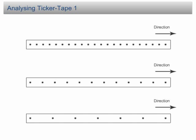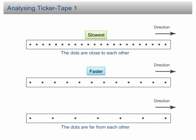Analyzing ticker tape. The motion of the object pulling the ticker tape can be determined from the distribution of the dots on the ticker tape. The closer the dots, the slower the motion. The further apart the dots, the faster the object moved. For example, the dots in the first strip are close to each other, hence the speed is low. The second strip shows the object moved faster. In the third strip, the dots are further apart, indicating the object moved with the highest speed among the three.